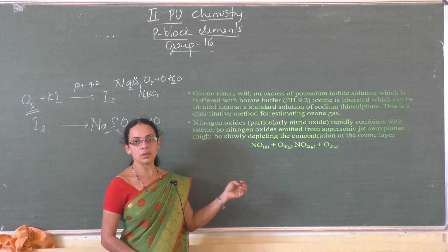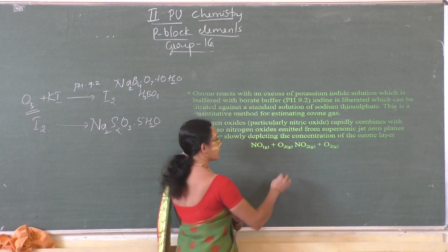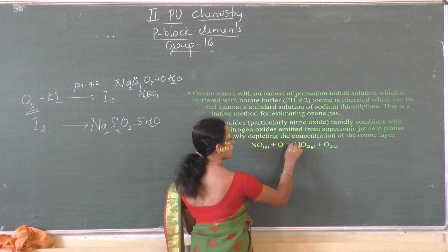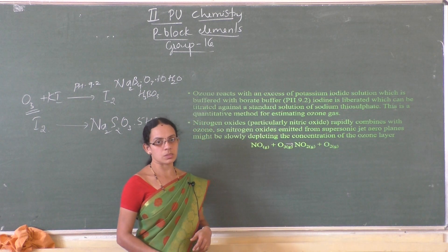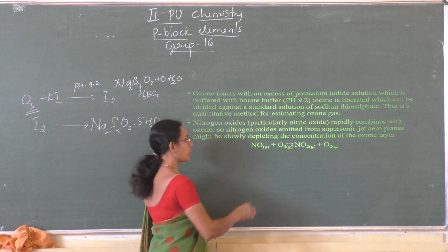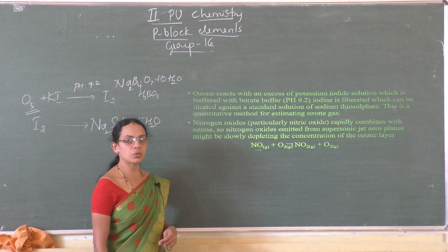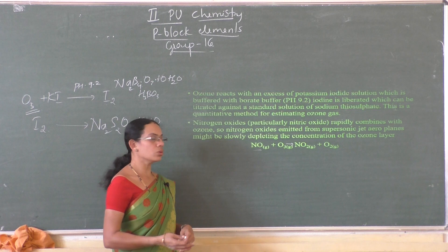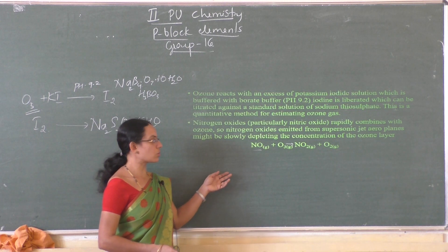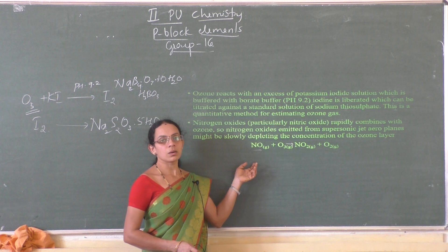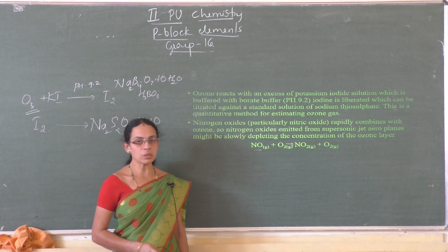Nitric oxide combines with ozone to form nitrogen dioxide and oxygen. This is one of the main causes for the depletion of the ozone layer. Chlorofluorocarbons released from refrigerators are also a cause for the depletion of the ozone layer.